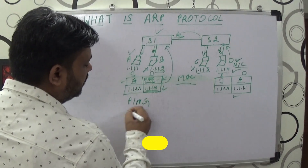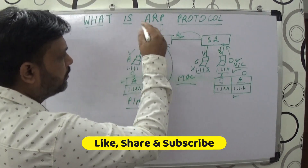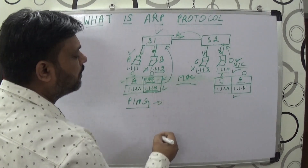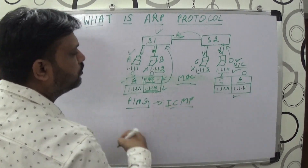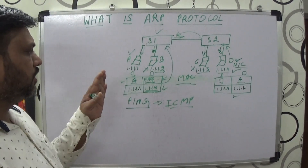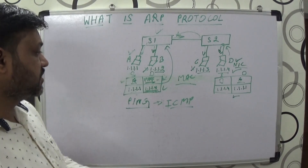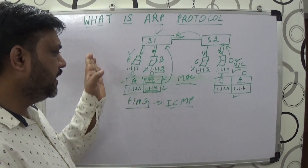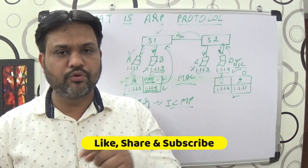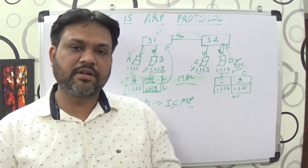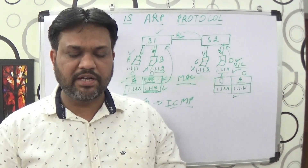Now the ping command will transfer the data. ARP protocol only helped the ping command to identify the destination — otherwise ping uses ICMP protocol to transfer the data, which we'll talk about in another video. I hope in this video you have understood how ARP protocol helps any computer or source to identify the destination. If you liked this video, hit the like button; if not, hit dislike. If you haven't subscribed to our channel, please hit the subscribe button below. Stay safe and we'll see you in the next video.